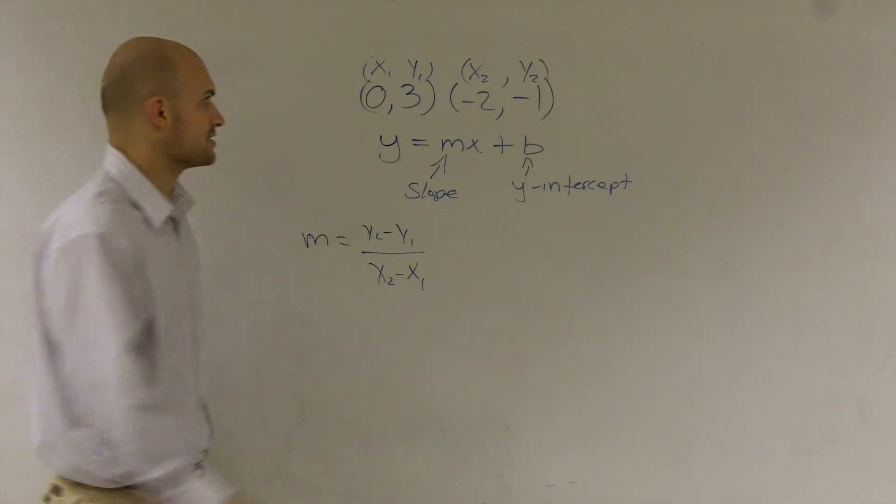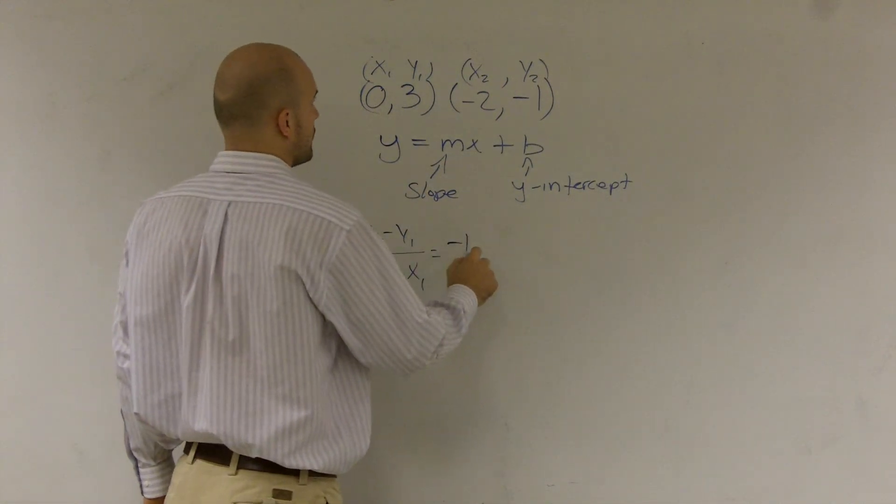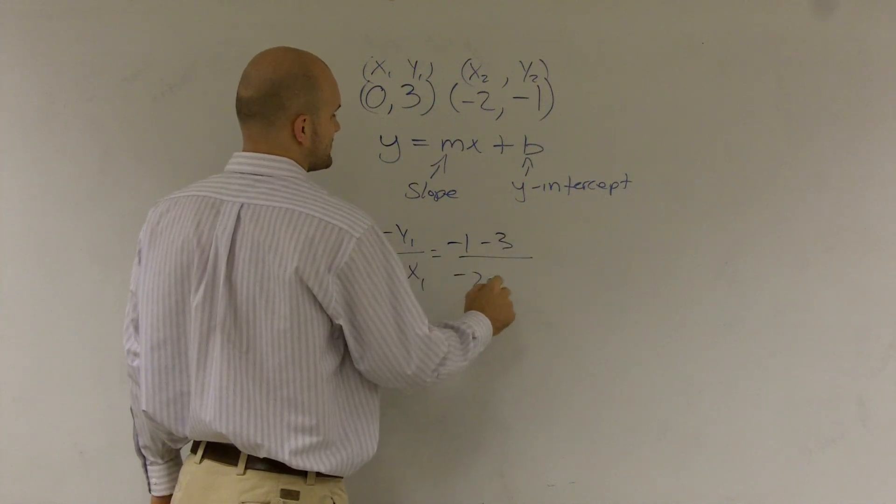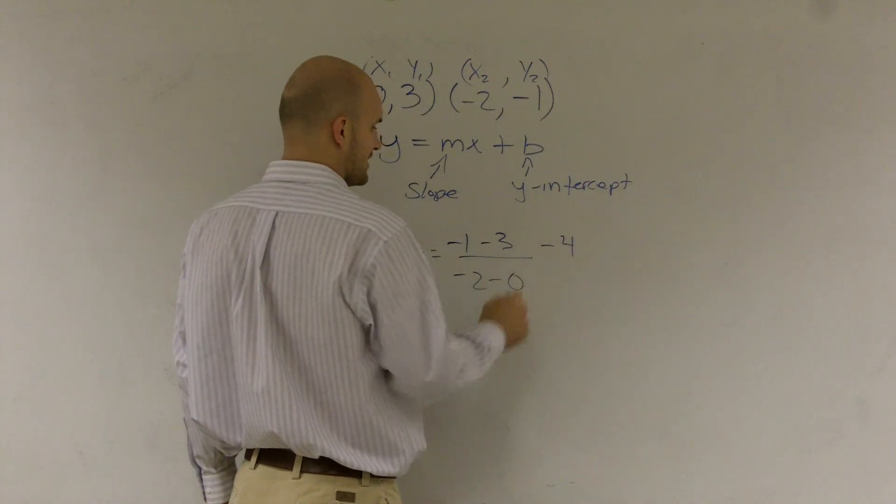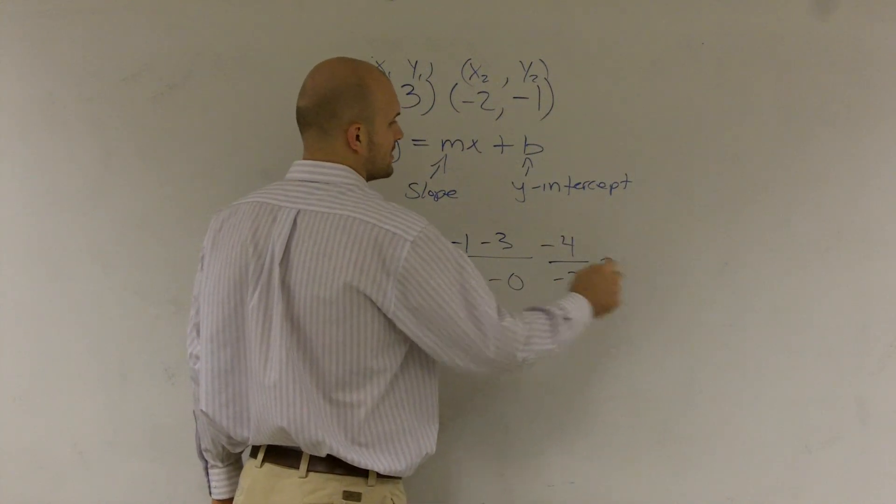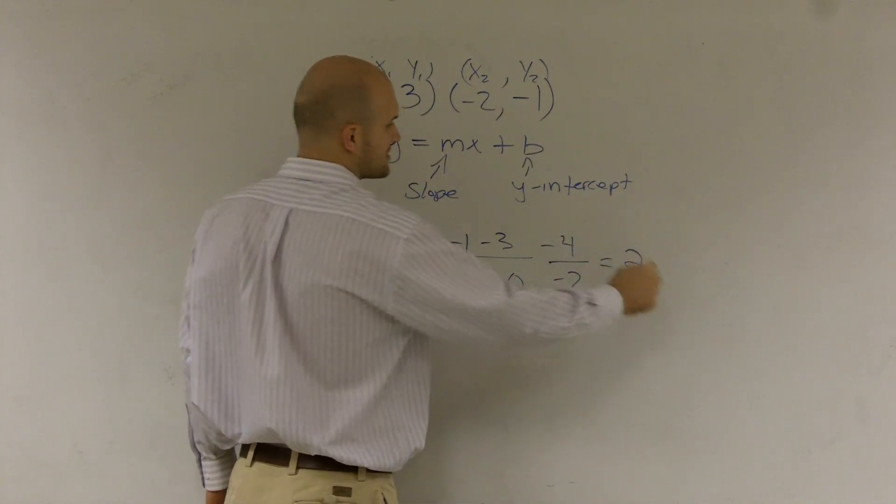So now I can just plug them in. So I get negative 1 minus 3 over negative 2 minus 0. Negative 1 minus 3 is a negative 4. Negative 2 minus 0 is a negative 2. Negative 4 divided by negative 2 is a positive 2.